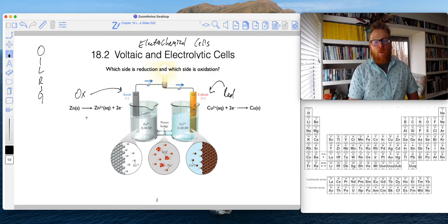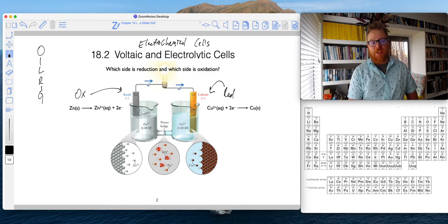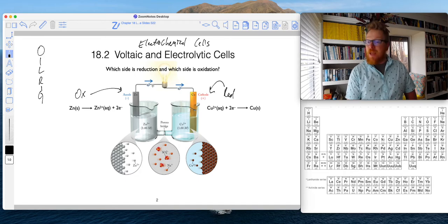What happens here as zinc loses these electrons, they travel through this wire. You can see they go into lighting up this light bulb, but they will continue to travel through this wire and into the copper half.